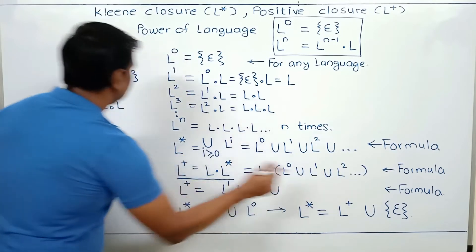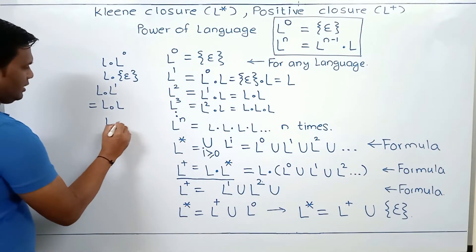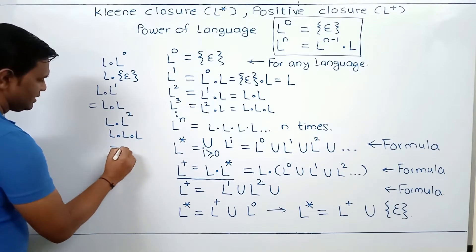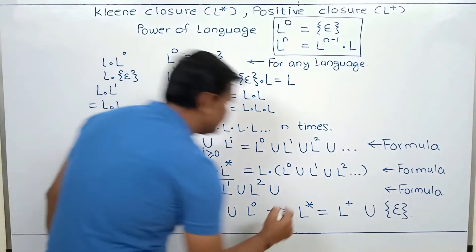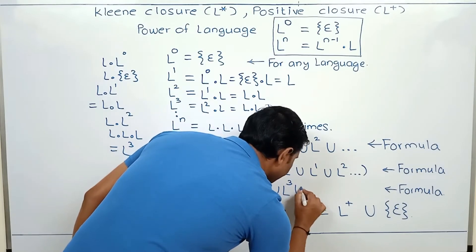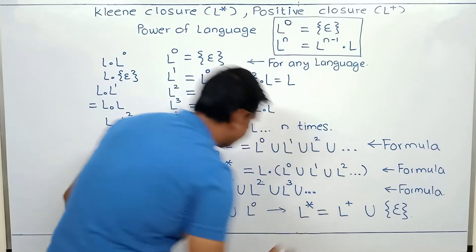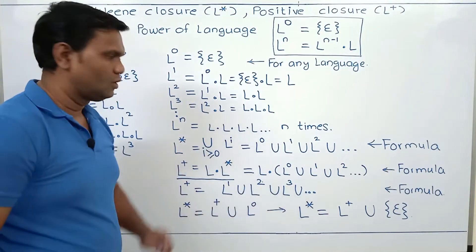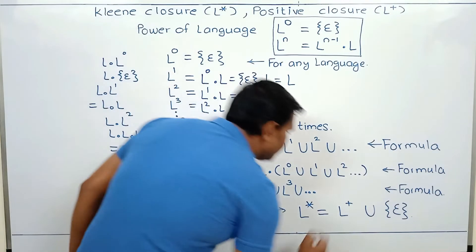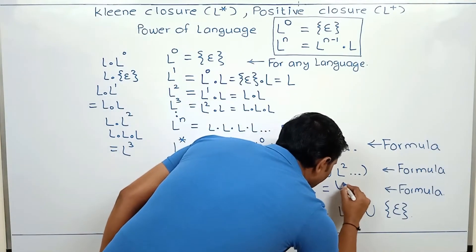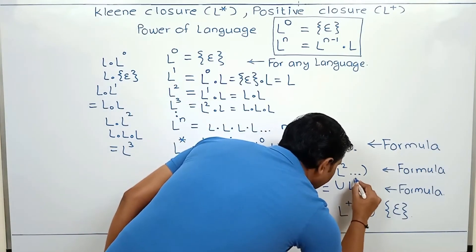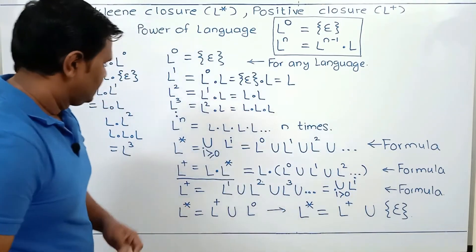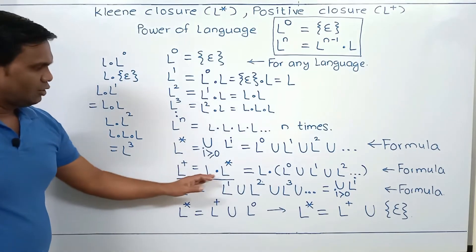L dot L power 2 will be L dot L dot L, which is L power 3. So L plus is L power 1 union L power 2 union L power 3 and so on, which means L plus starts from L power 1.